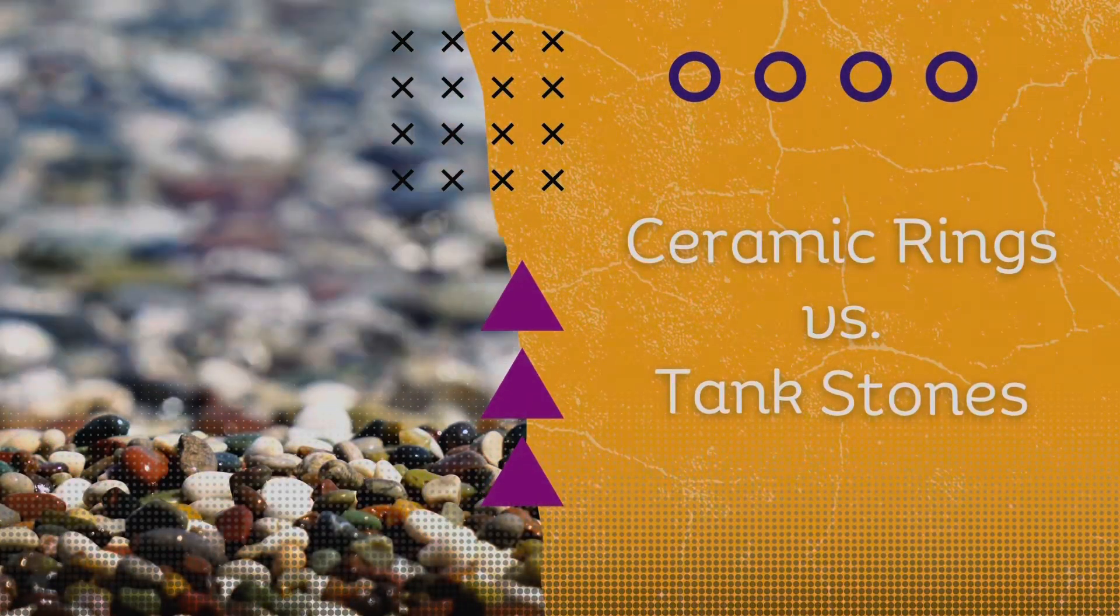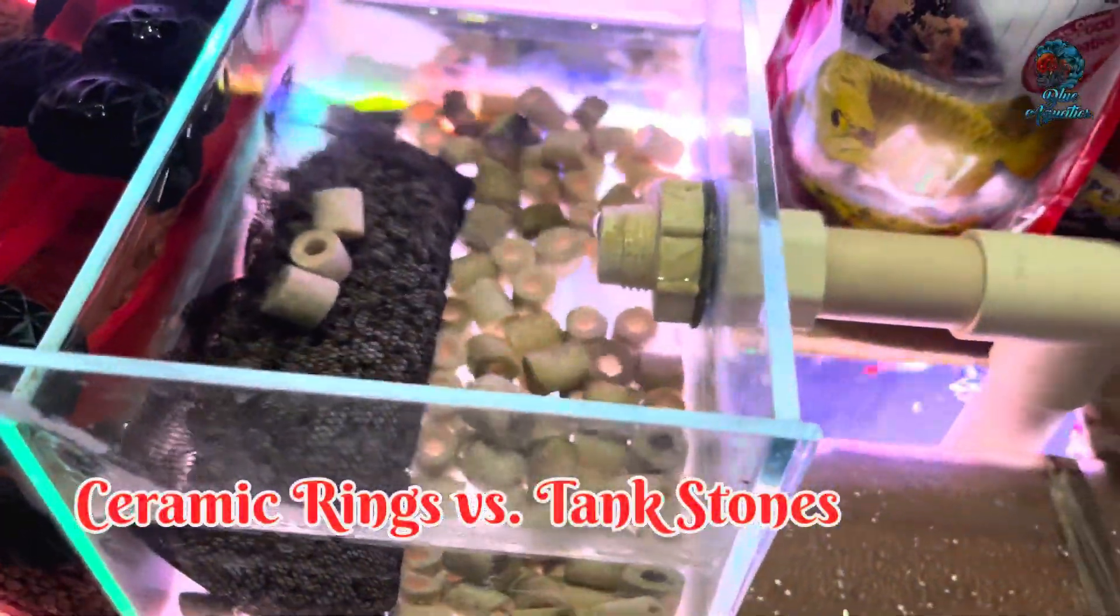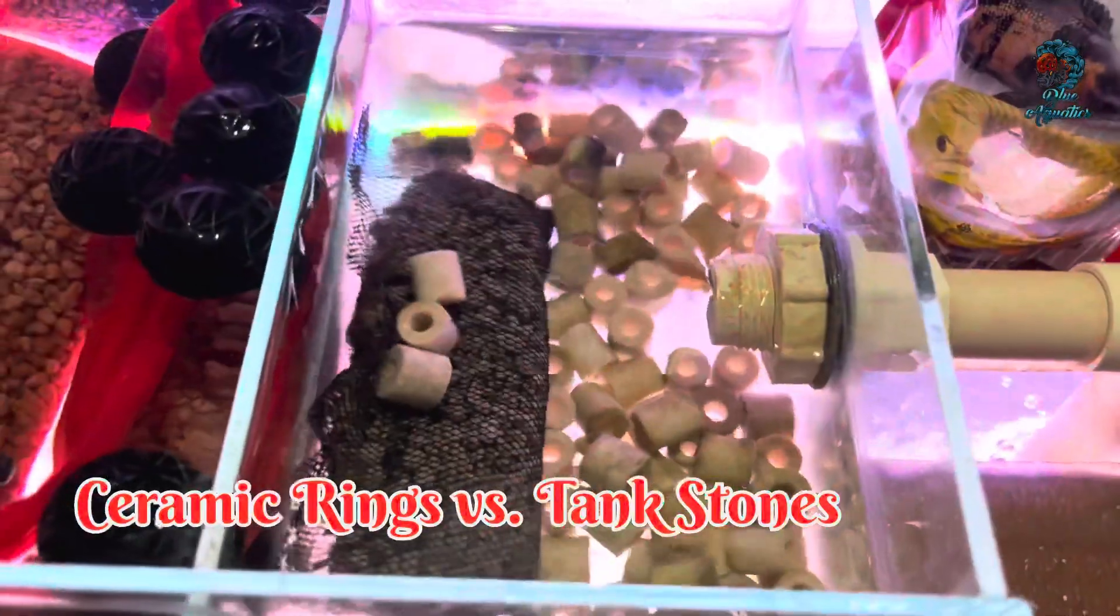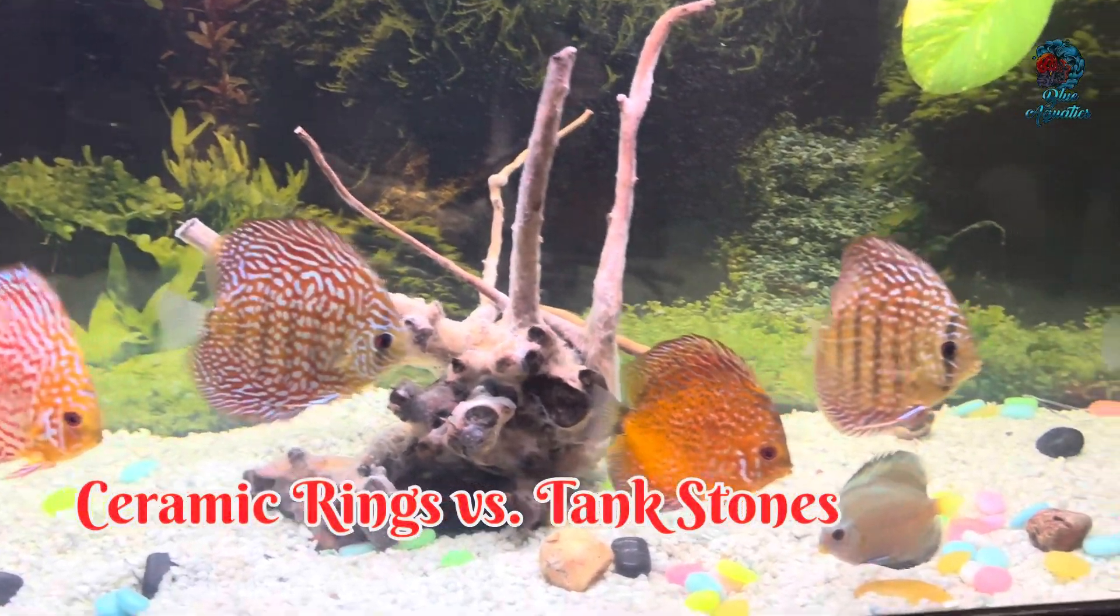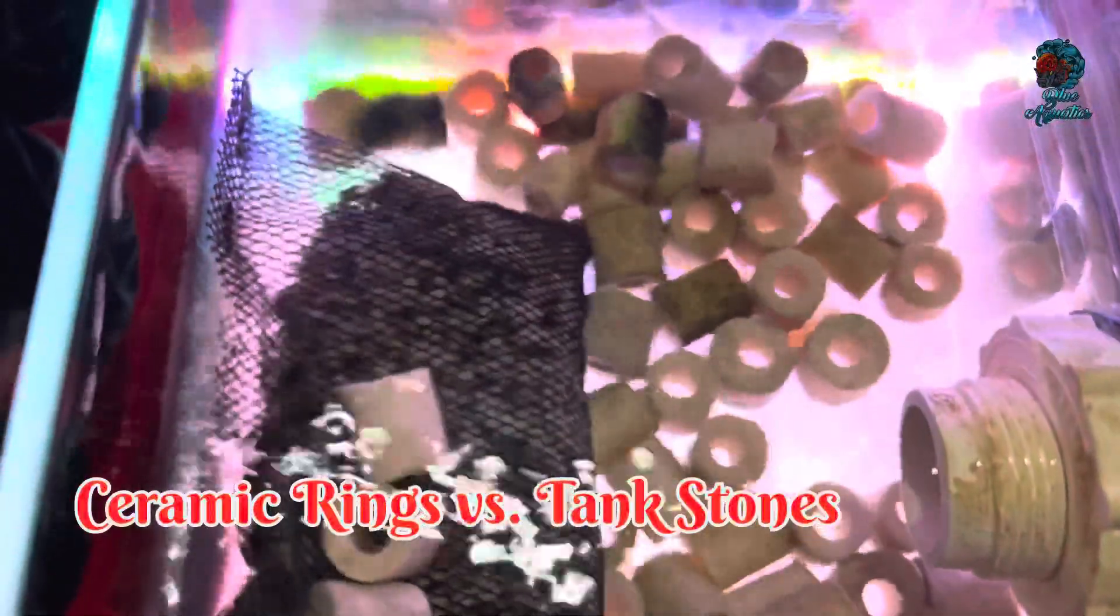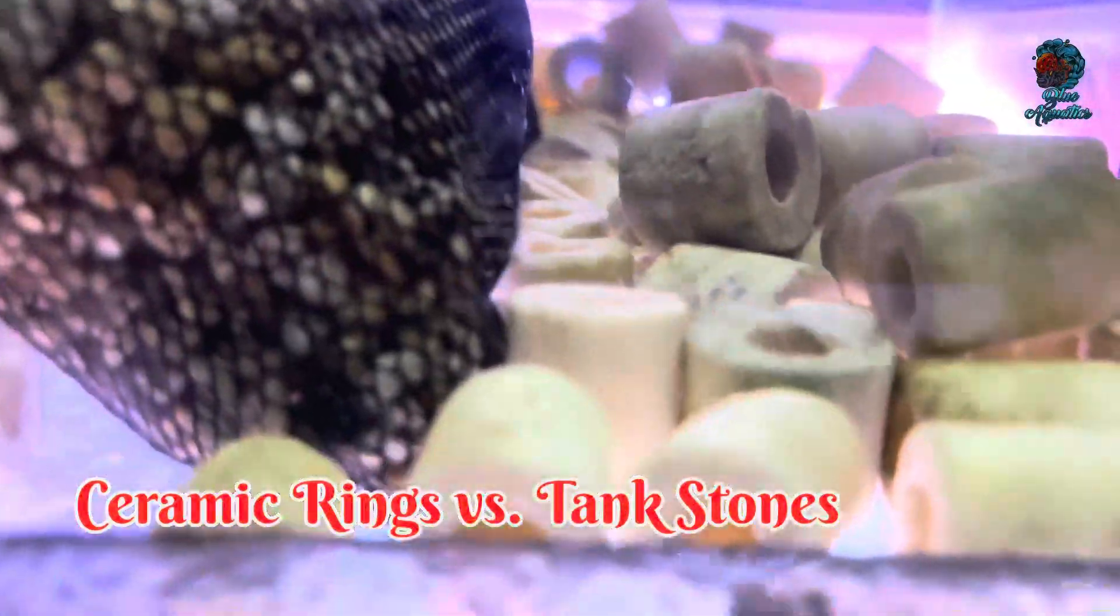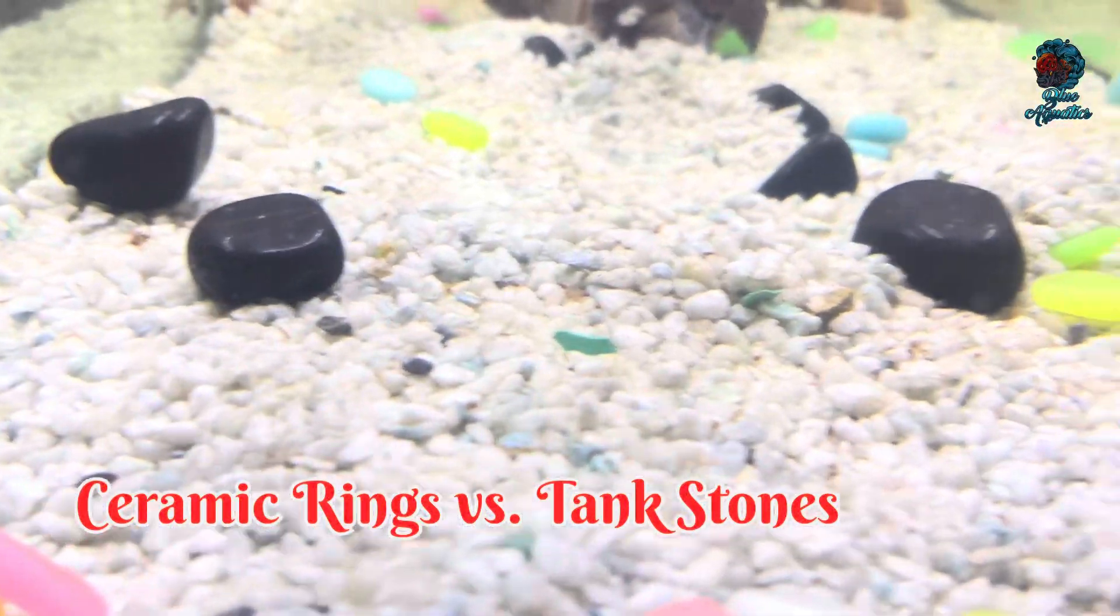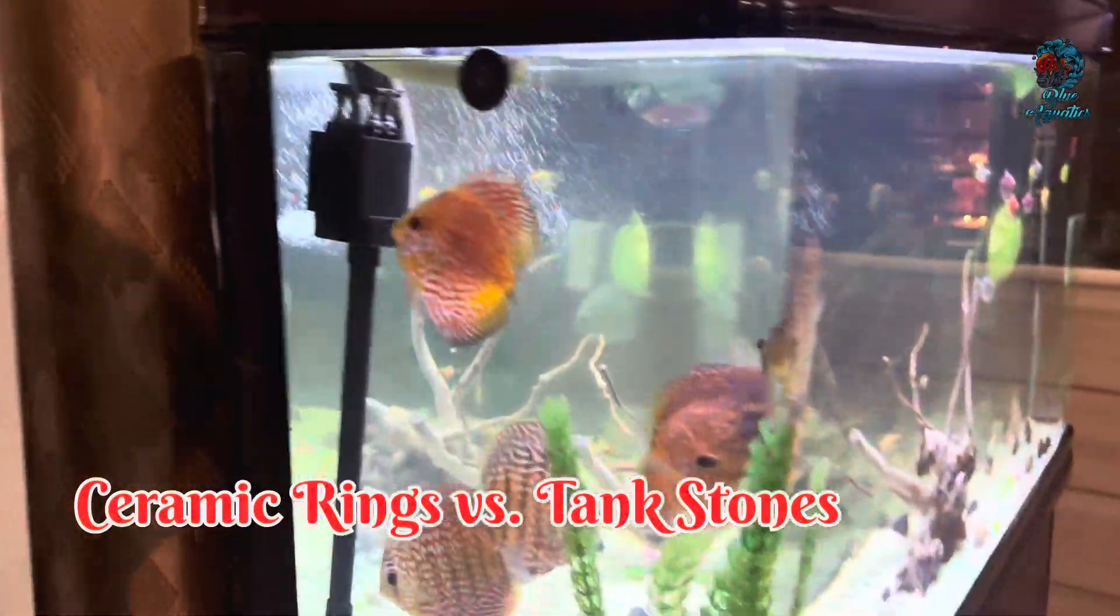Ceramic rings versus tank stones. Now let's compare ceramic rings and tank stones as media for bacterial colonization. Ceramic rings and tank stones are both popular choices, but they serve very different purposes in your aquariums. Ceramic rings are specifically designed for biological filtration. They are porous and have a high surface area, making them ideal for housing beneficial bacteria. On the other hand, tank stones are primarily used for aesthetics. They are solid and have significantly less surface area, which limits their effectiveness for bacterial colonization.